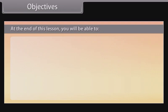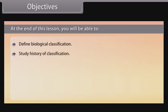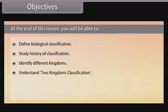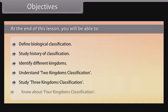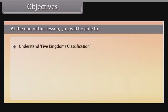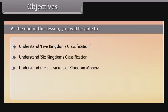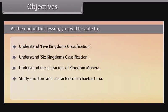At the end of this lesson, you will be able to: define biological classification, study the history of classification, identify different kingdoms, understand two kingdoms classification, study three kingdoms classification, know about four kingdoms classification, understand five kingdoms classification, understand six kingdoms classification, understand the characters of Kingdom Monera, and study the structure and characters of Archaebacteria and Eubacteria.